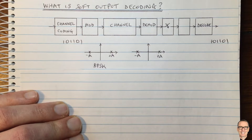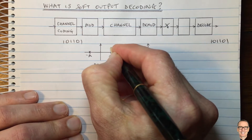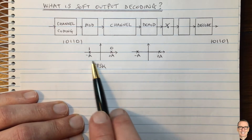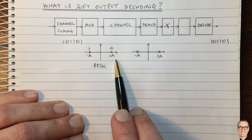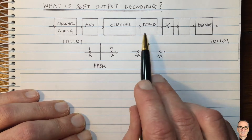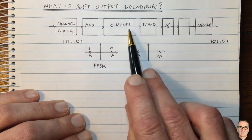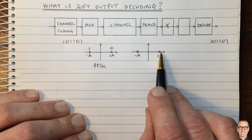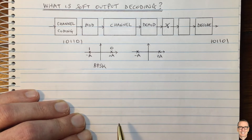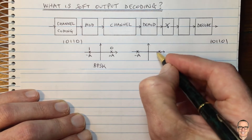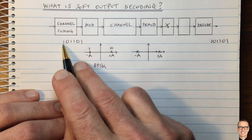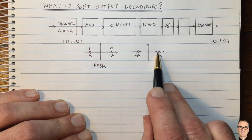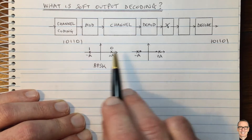Here we are mapping a zero to one point and a one to another on the constellation, and these are the waveforms we're going to send. For details about constellation diagrams look in the description below. After the channel there's noise, so when we do the demodulation and sample we won't be getting exactly plus A and minus A — we'll be getting a noisy version, perhaps a bit less for the first bit, and a bit less from noise for the next one.